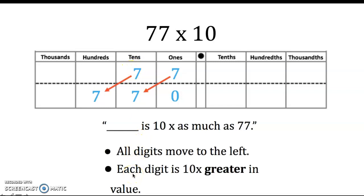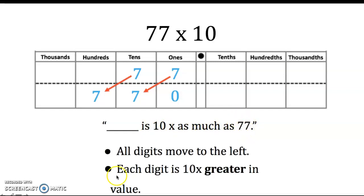When you multiply a number by 10, each digit within the number being multiplied — the factor — becomes 10 times greater in value. The way that we describe that relationship between the product and the factor is by stating a number, which would be the product, is 10 times as much as the factor. In this instance of multiplying 77 by 10, we would state that the product, 770, is 10 times as much as the factor, 77.